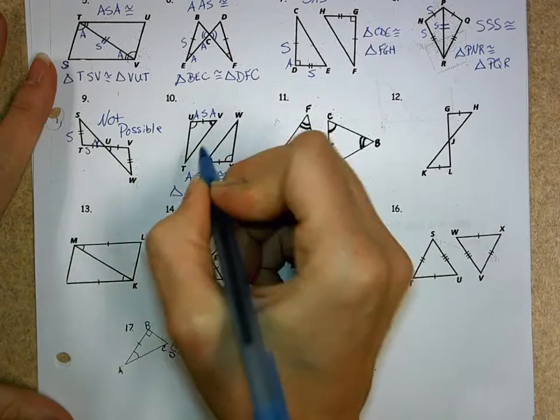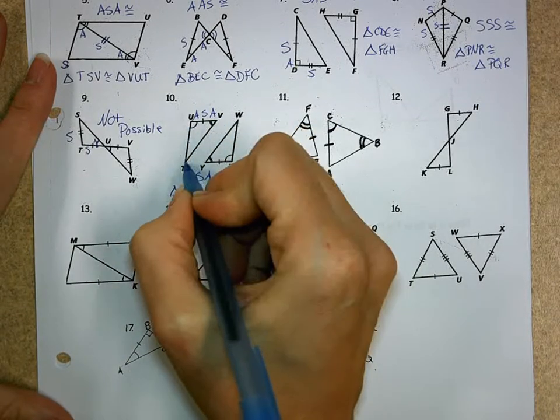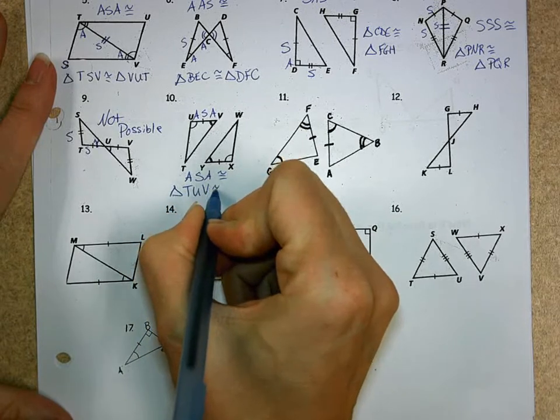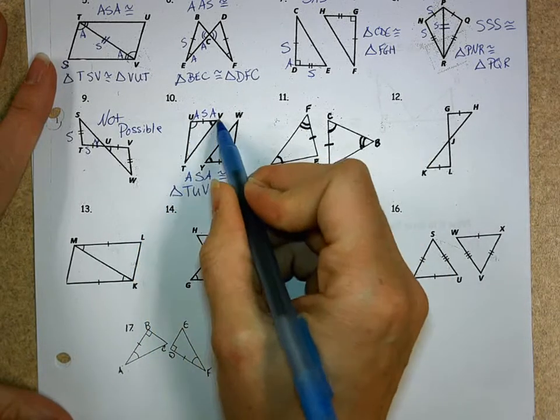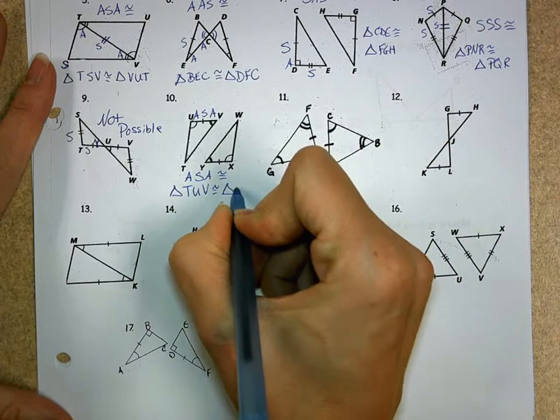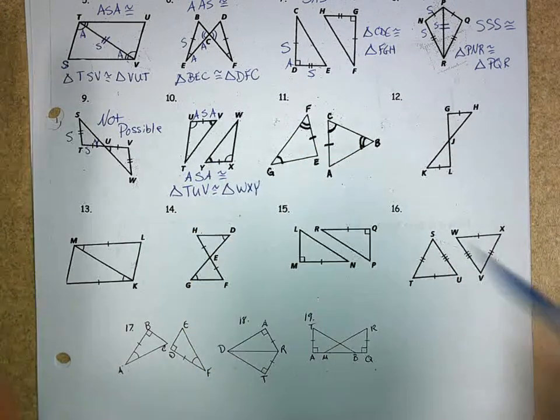Now, how do I write my congruence? Well, you name it just matchy-matchy. So, I go T-U-V, and I always use the angles most of the time, so I went from the no mark to one mark to two marks. No mark to one mark to two marks. It's just a way of working with it.